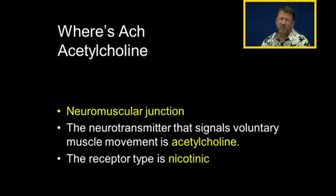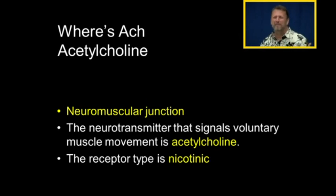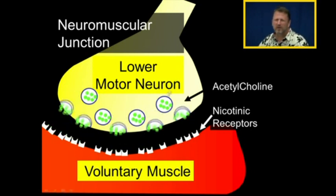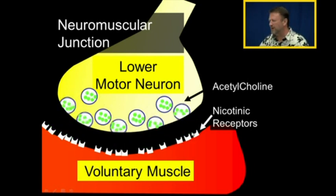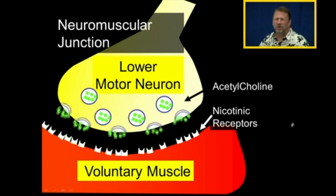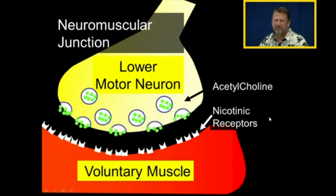Acetylcholine is found at the neuromuscular junction — the place where the neurotransmitter signals voluntary muscle movement. Muscles that you can move, striated muscle, use acetylcholine as the signal. The receptor type on the neuromuscular junction is nicotinic. The lower motor neuron comes from the spinal cord and releases acetylcholine into the synaptic space, which is sensed by nicotinic receptors. This is how the lower motor neuron communicates with voluntary striated skeletal muscle, using acetylcholine as the signal and nicotinic receptors as the sensors.